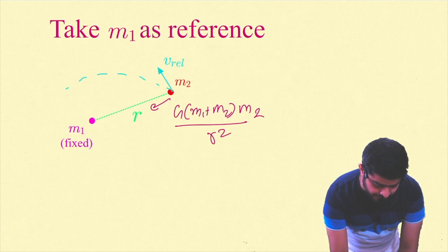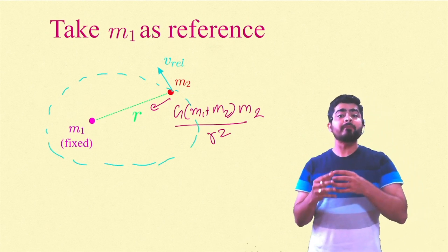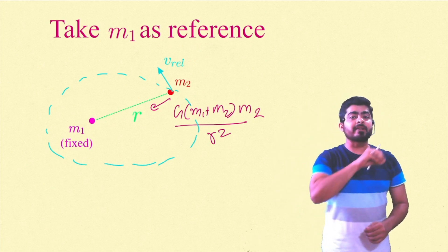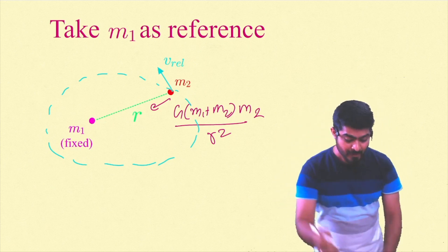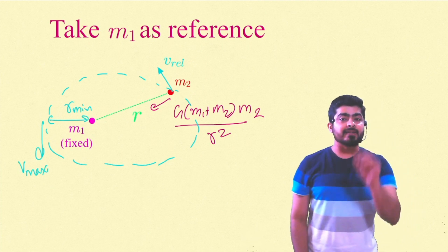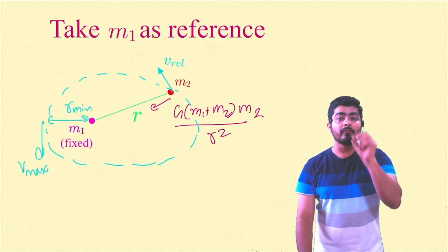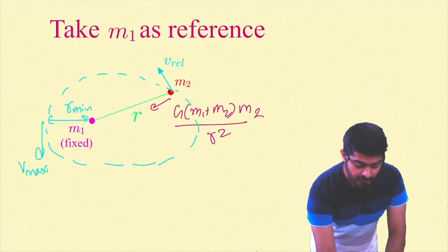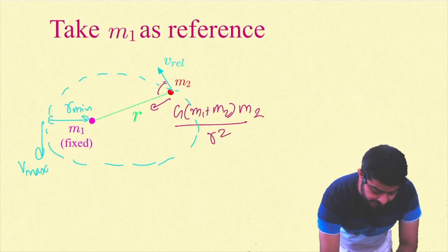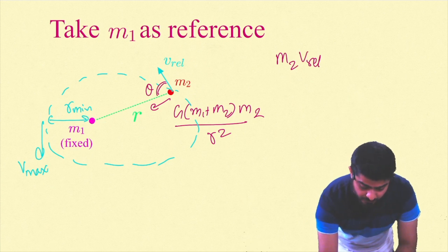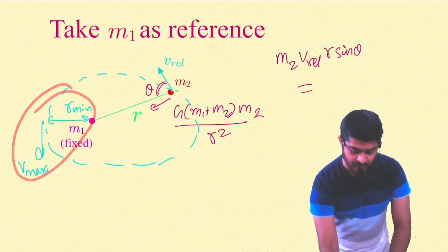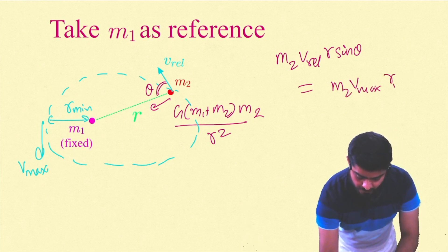In the reference frame of m1, m2 undergoes an elliptical path around m1 with m1 at the focus. At minimum distance r_min the velocity is v_max (in the relative frame). Using conservation of angular momentum: m2·v_relative·r·sinθ = m2·v_max·r_min.